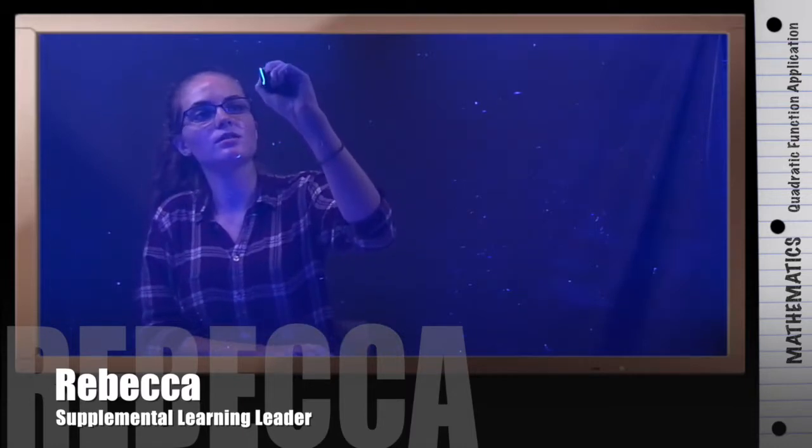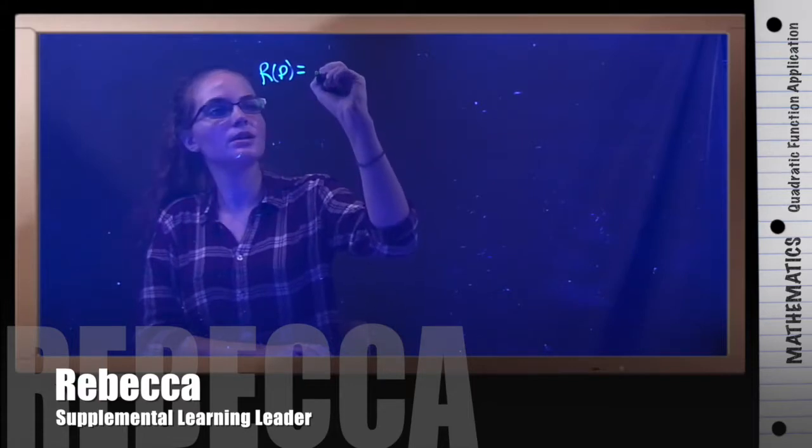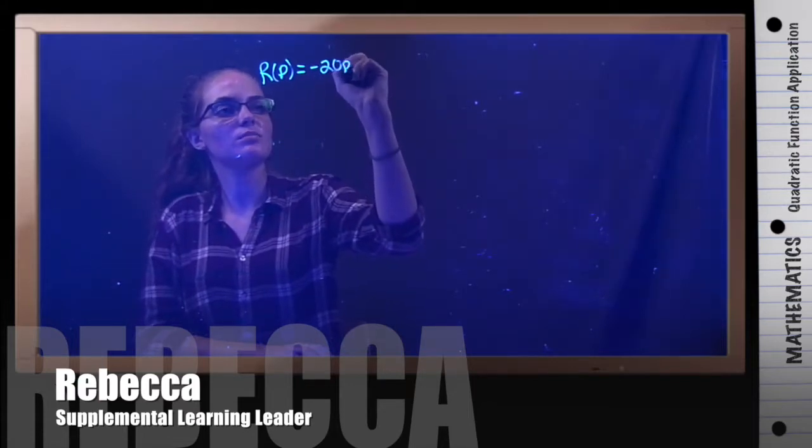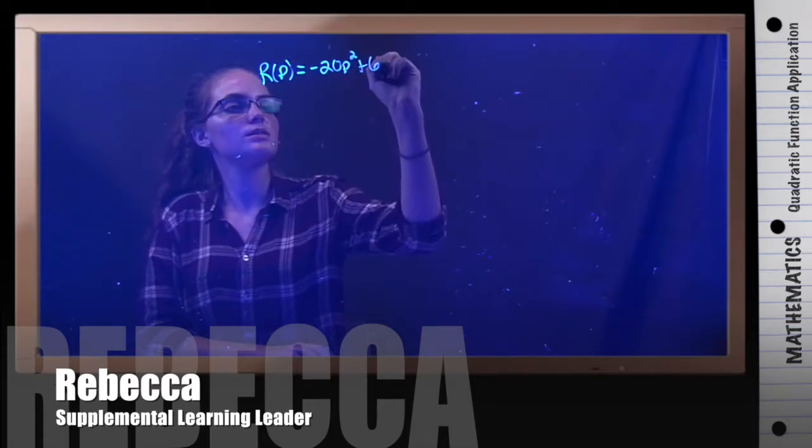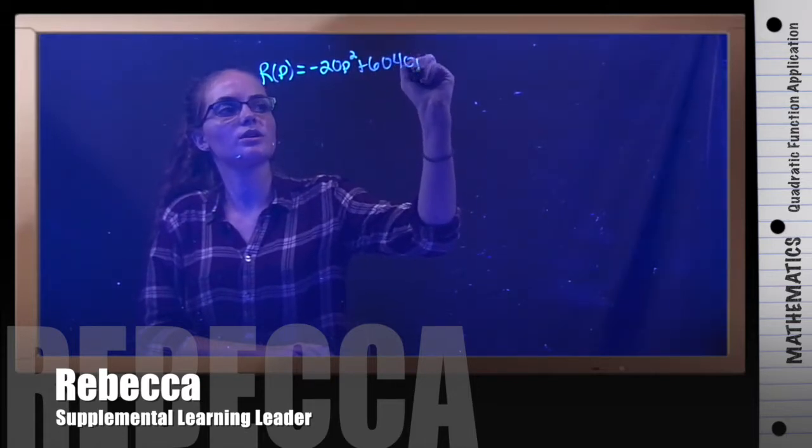For this example we're going to do a word problem involving quadratic functions. The problem says Mikaela wants to sell calculators. The revenue function is given by r of p equals negative 20p squared plus 6040p.